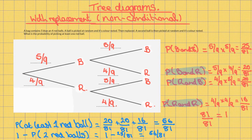That is also the same as the probability of one minus the probability of two blue balls — which is one minus 25 out of 81 — which is also 56 out of 81.